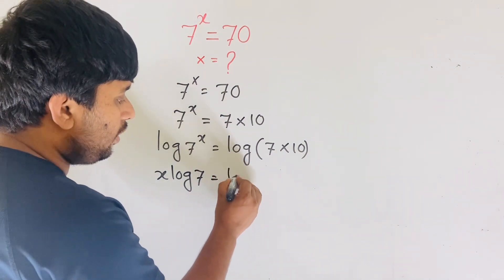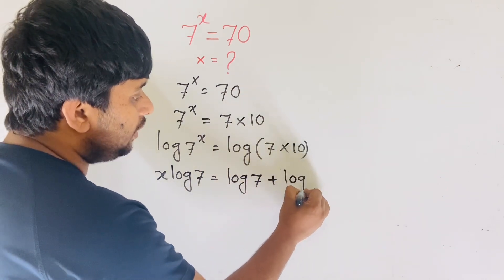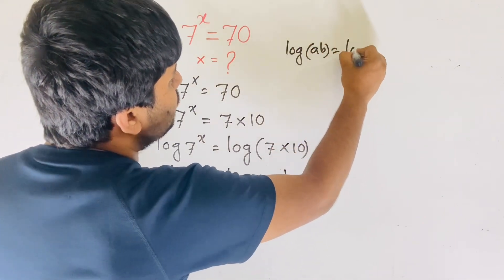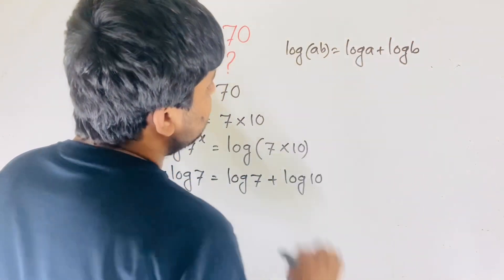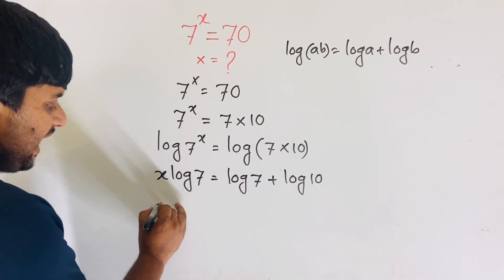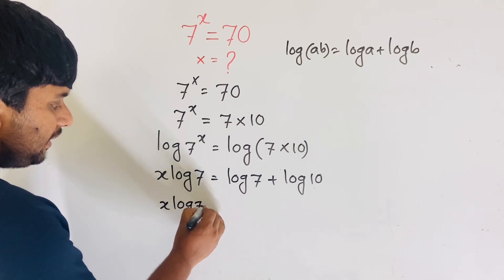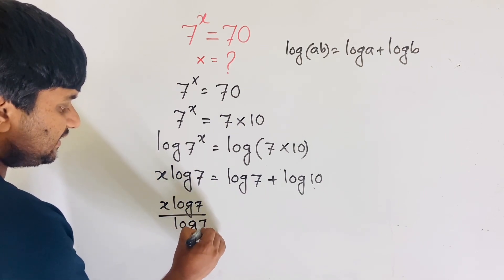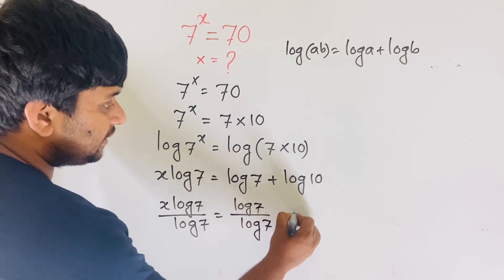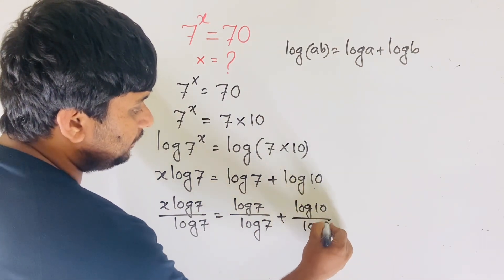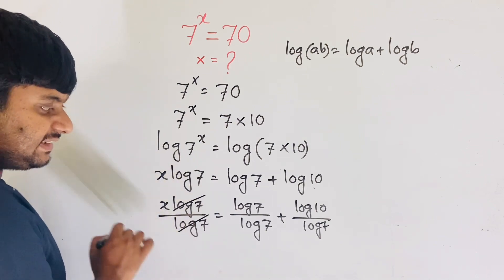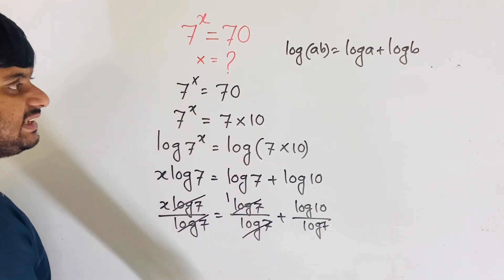Using the logarithm product rule — log(a·b) equals log a plus log b — we get x·log7 equals log7 plus log10. Dividing both sides by log7, the log7 terms cancel, leaving x equals 1 plus log10 over log7.